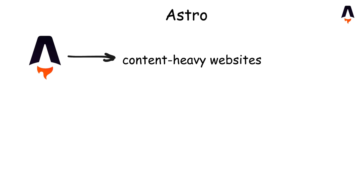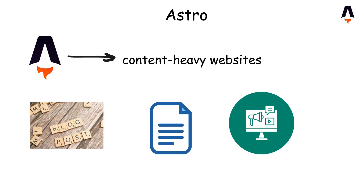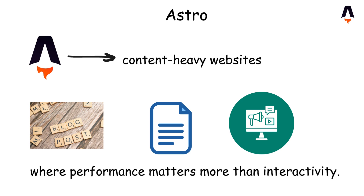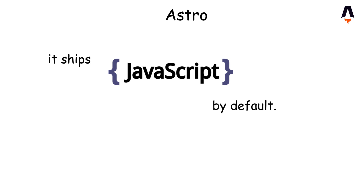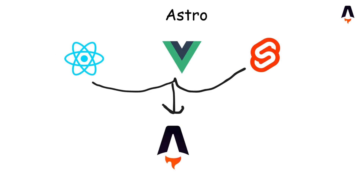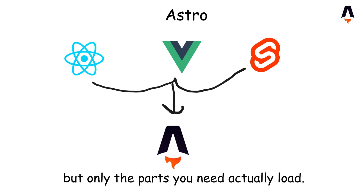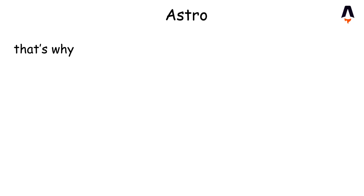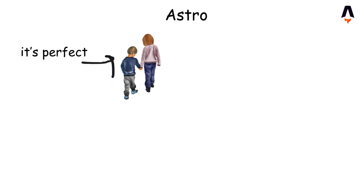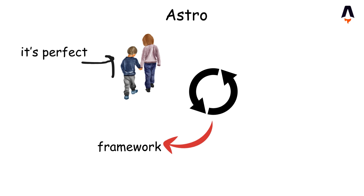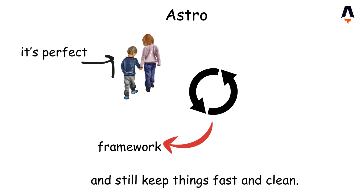Finally, Astro — the minimalist among modern frameworks. It's designed for content-heavy websites: blogs, docs, marketing pages where performance matters more than interactivity. Its magic trick is that it ships zero JavaScript by default. You can use React, Vue, or Svelte inside Astro, but only the parts you need actually load. That's why Astro sites are lightning fast — it sends HTML, not heavy JavaScript bundles. It's perfect for mixing frameworks while keeping things fast and clean.